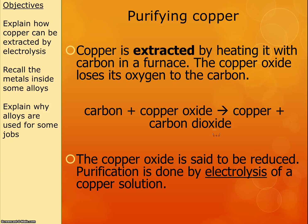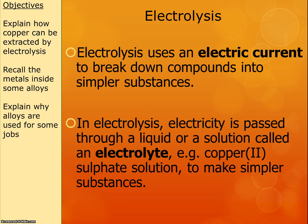Once we've got our copper, sometimes it can be a little bit impure. So often we want to purify it, and we do that by a process called electrolysis. Electrolysis is the process by which you use electrical current to split up substances — 'electro' means using electricity, and 'lysis' means to split.